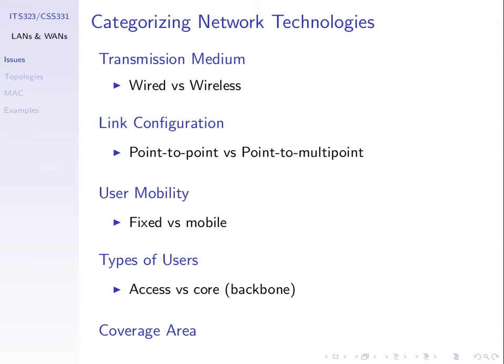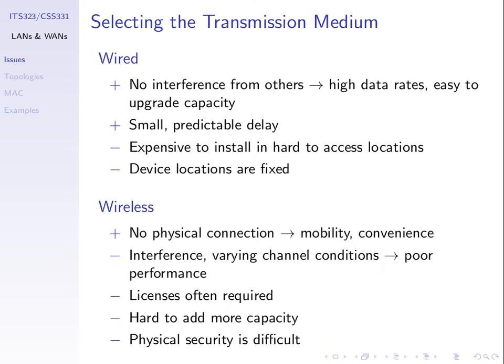We'll show a picture to compare access and core networks. The last classification is based upon coverage area — how big is the network physically. We classify networks based upon coverage area, so let's look at them briefly.